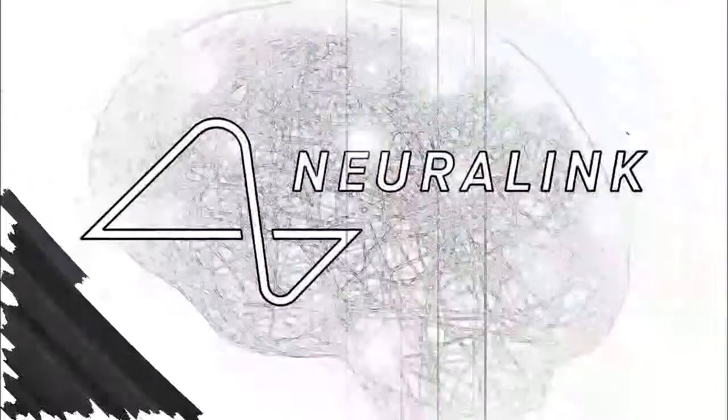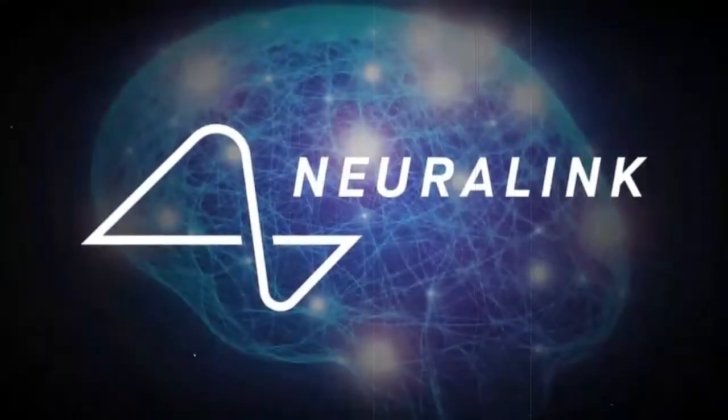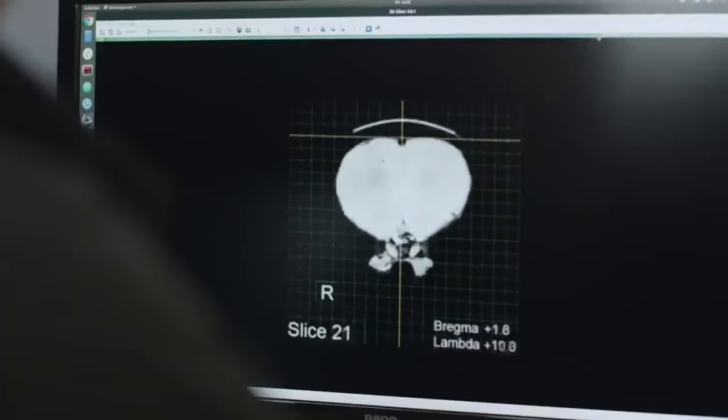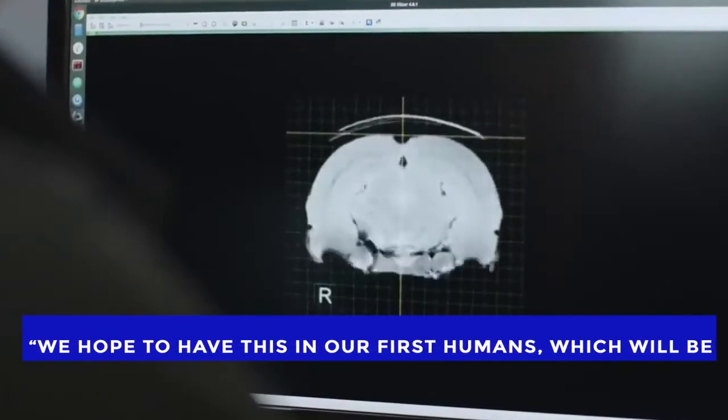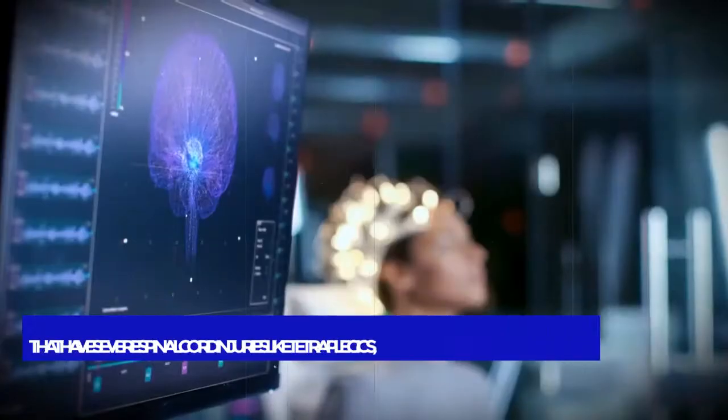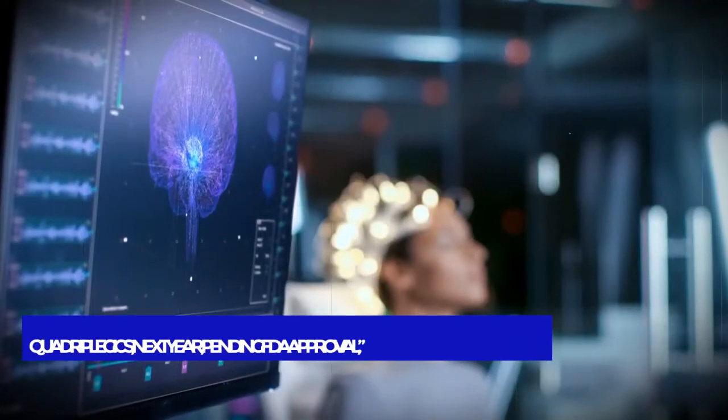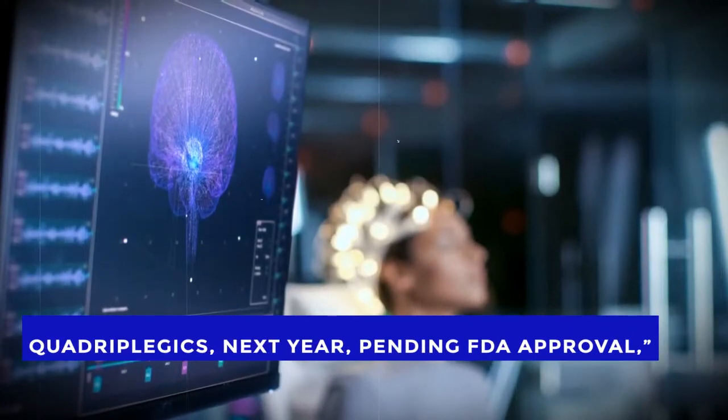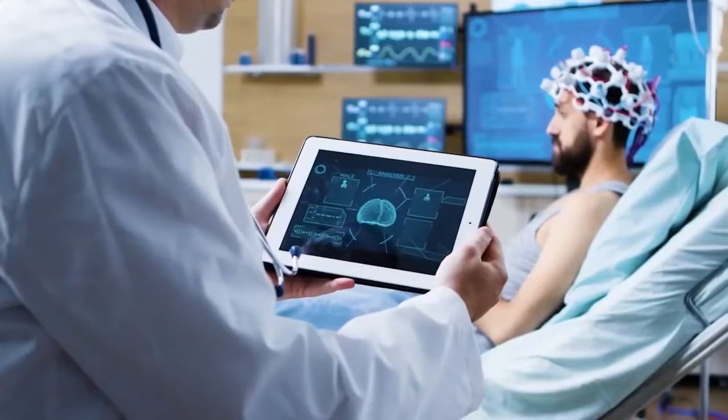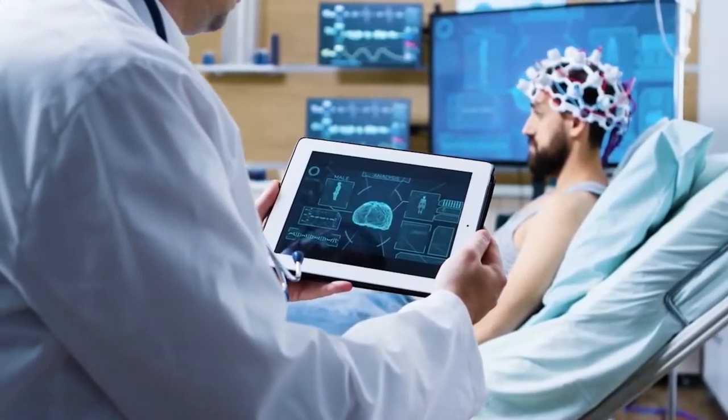Musk is, however, confident that human trials could begin as early as 2023. We hope to have this in our first humans, which will be people that have severe spinal cord injuries like tetraplegics, quadriplegics, next year pending FDA approval, Musk told the Wall Street Journal CEO Council Summit.